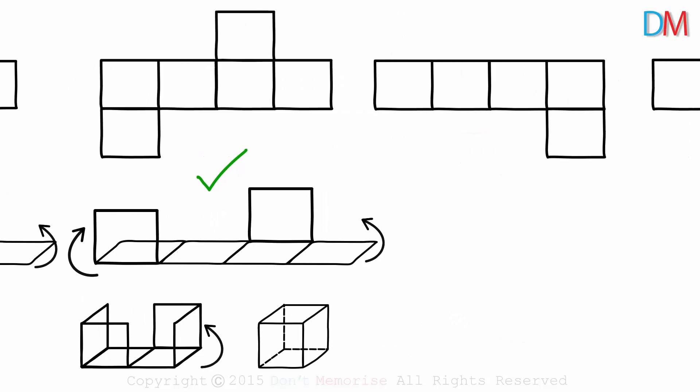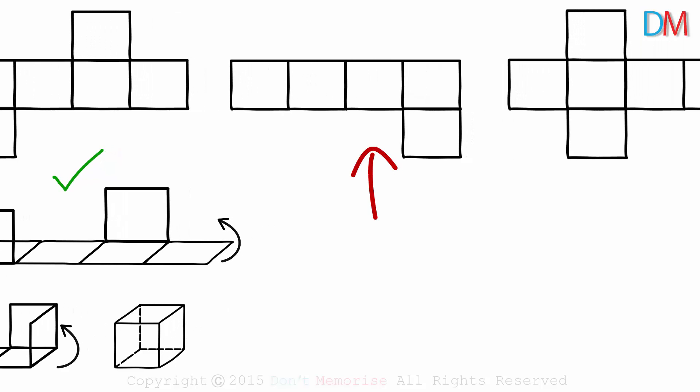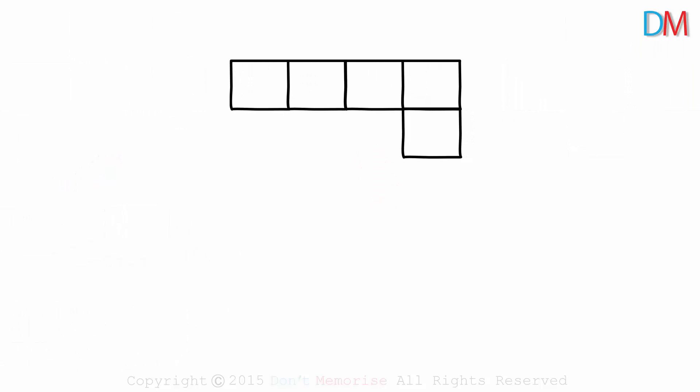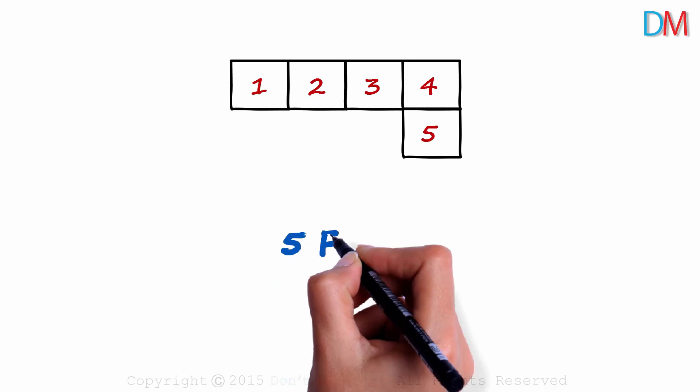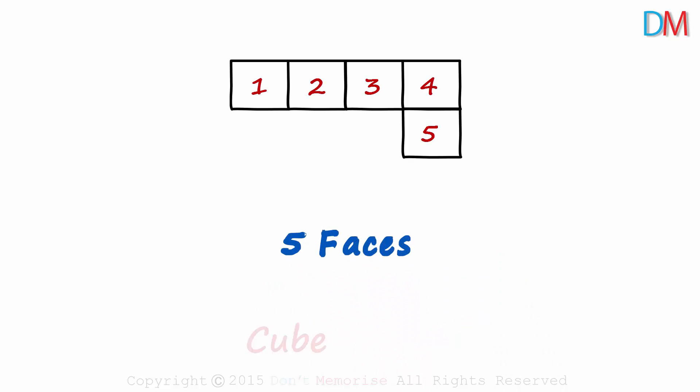What about the third net? Can a cube be formed out of it? Pause the video and give it a thought. It shouldn't have taken you much time. If you observe the figure well, it has just five faces. Not enough to form a cube because a cube has six faces. So a cube cannot be formed from this net.